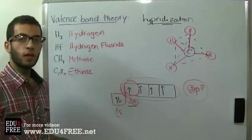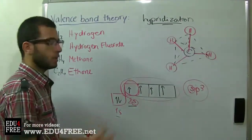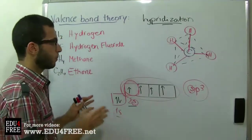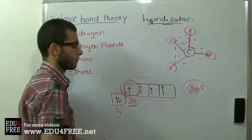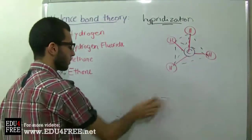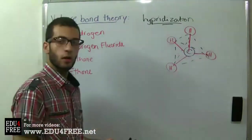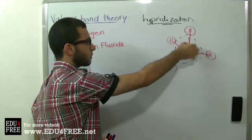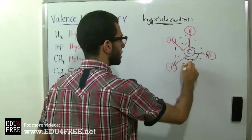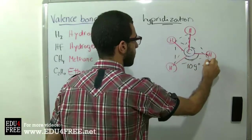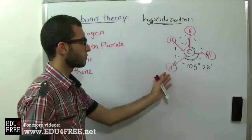So the hybridized orbital is called sp3. In order to form the covalent bonds between the hydrogen atoms and the carbon atom, the new hybridized orbital positions itself so that no repulsion occurs between the orbitals or the hydrogen atoms. The hybridized orbitals move apart from each other so that the angle between each two orbitals is 109 degrees and 28 minutes.